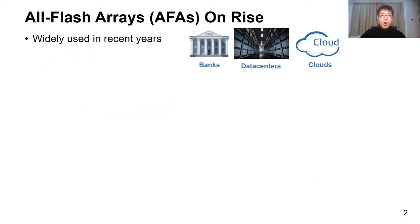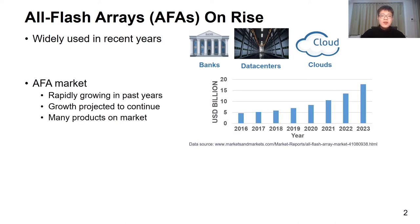The use of all flash arrays, or AFAs, has been increasing especially in places like banks, data centers, and clouds. For example, an SSD array can be used as a buffer for faster writes in front of a distributed HDD-based storage cluster. The global AFA market has been growing fast, valued around $5 billion in 2016, and expected to reach $18 billion by 2023.